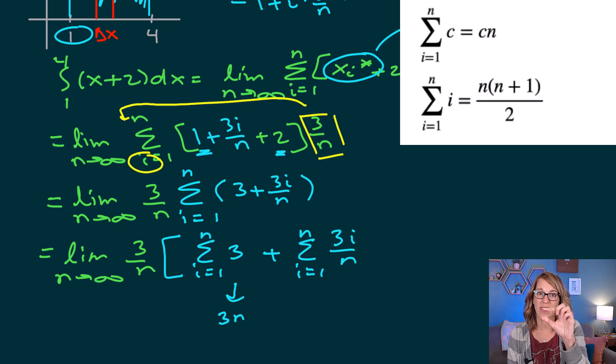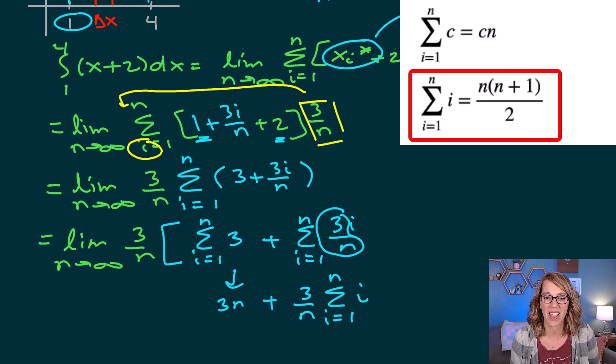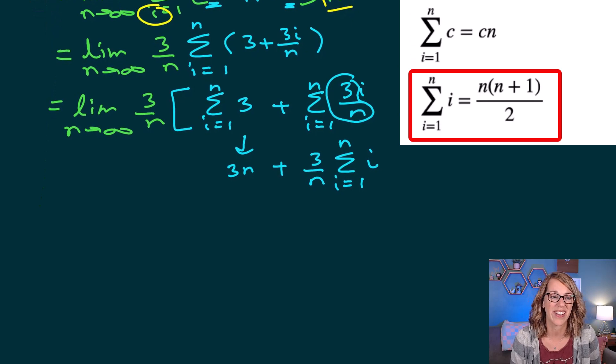Plus the summation i goes from 1 to n of 3i over n. Well, remember how we brought that 3 over n out in front? I could do the very same thing with this 3 over n here. So that's going to be plus 3 over n, and I'm going to apply the summation formula for i. My summation formula for i is going to get me n times n plus 1 divided by 2.